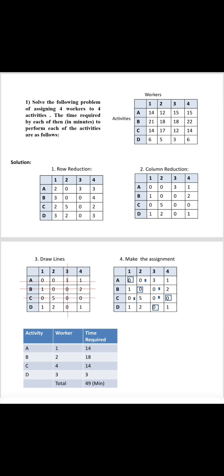For doing this assignment, we are going to use the Hungarian method technique. As per this technique, there are four steps: step one is row reduction, step two is column reduction, step three is draw lines, and the last step is make the assignment.